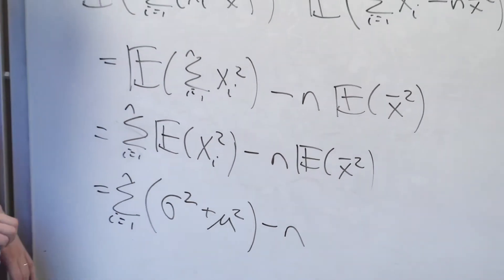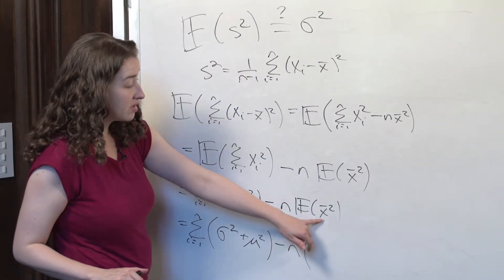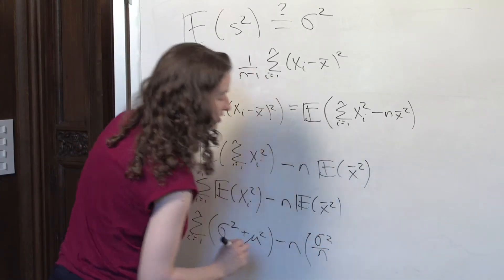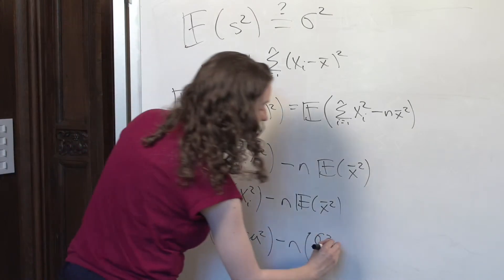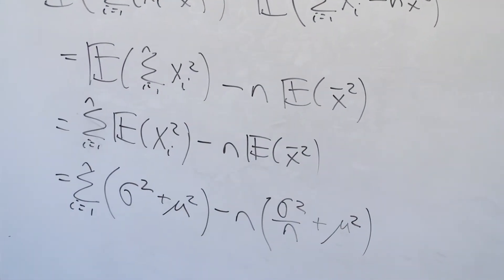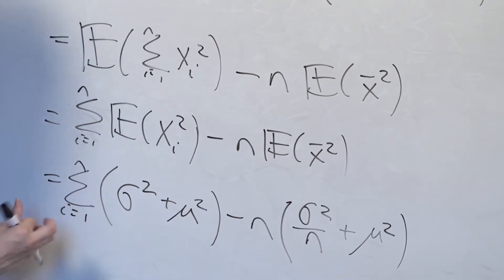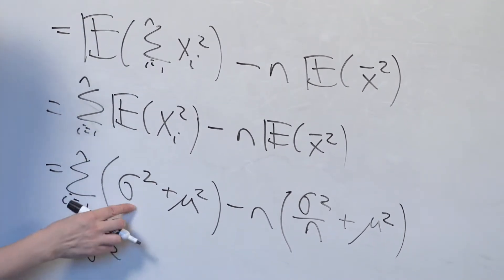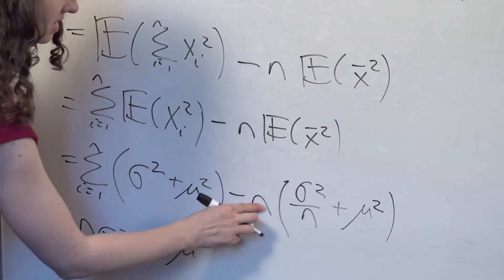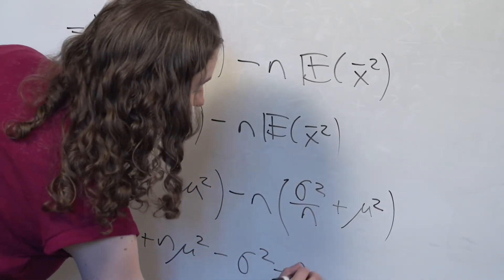Now I'm going to use the property again. The expected value of x-bar squared is equal to the variance of x-bar — which is sigma squared over n — plus the mean of x-bar squared, which is just mu squared. So we have n sigma squared plus n mu squared minus n times (sigma squared over n plus mu squared), where the n's cancel.